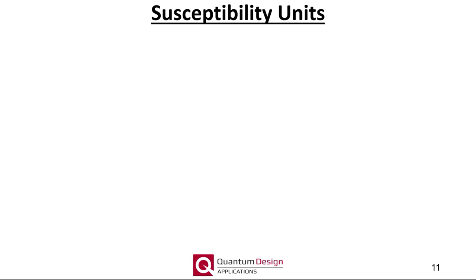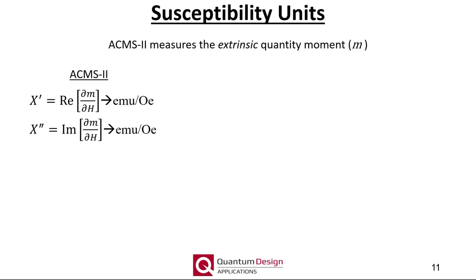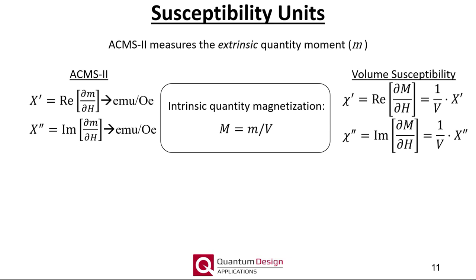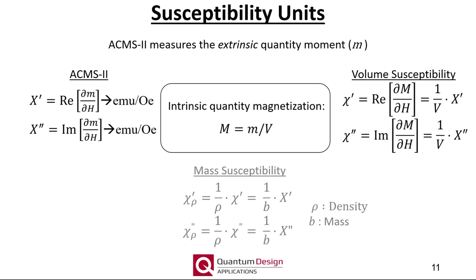A few comments on the measured quantities and unit system employed by the ACMS2. Strictly speaking, the ACMS2 does not report the volume susceptibility as commonly defined in most textbooks. The ACMS2, much like the VSM option, measures the extrinsic quantity moment, and therefore the Latin character capital X should be used, which we colloquially refer to as the susceptibility. The conventional volume susceptibility using the Greek symbol chi relies on the intrinsic quantity magnetization; one can calculate it by dividing the reported value by the sample volume. It is more convenient to define the mass susceptibility, calculated by dividing by the sample density or mass.